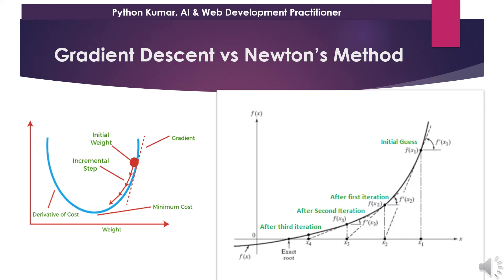Here you can see the graphical differences between gradient descent and Newton's method. In gradient descent, you take a point on the curve and you draw a tangent. The sign of the tangent — whether it is positive or negative — determines how much you subtract from the error. That is how gradient descent works practically.